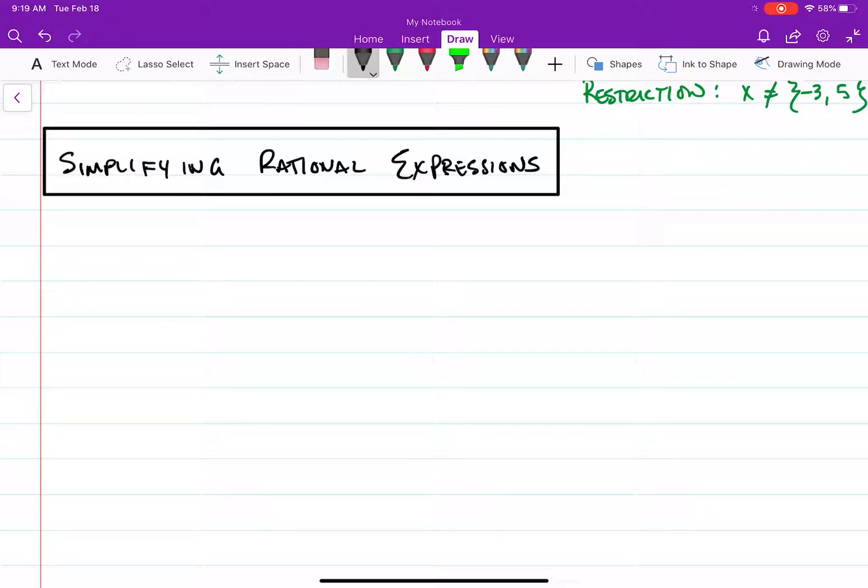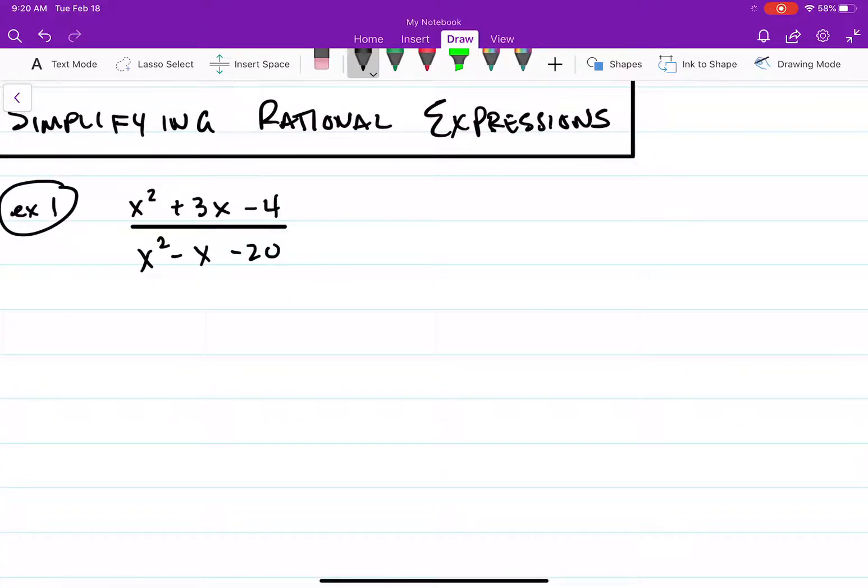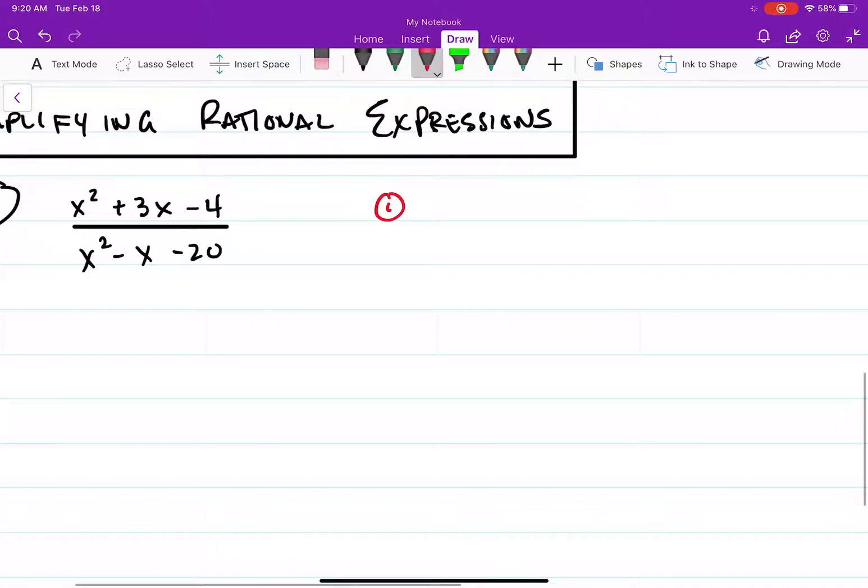So even when we're simplifying, we can still find restrictions as well. Anytime you have a fraction, no matter what, if there's x values in the denominator there are going to be restrictions. So let's say for example, let's say it's x squared plus 3x minus 4 divided by x squared minus x minus 20. So typically what I tell you guys to do is step 1 is to factor top and bottom.